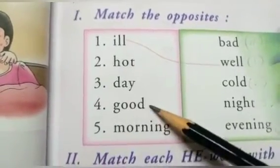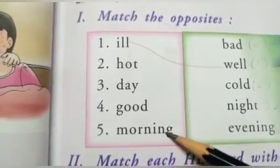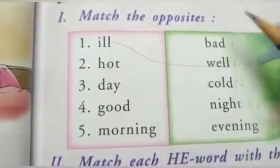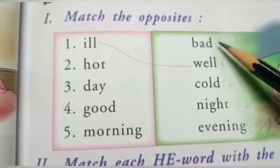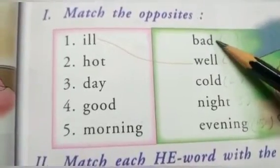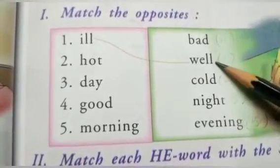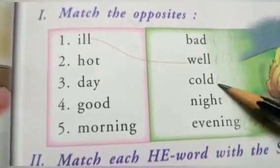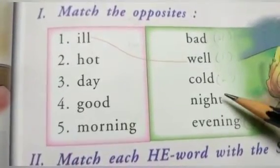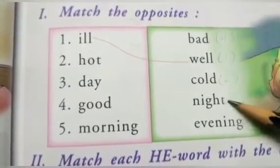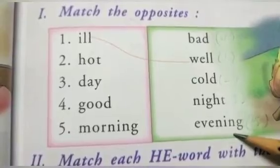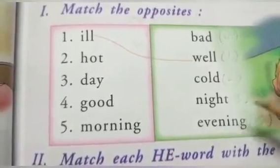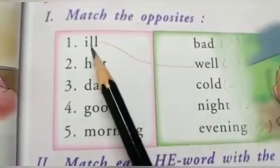his mom's loving son. Next one: match the opposites. In this column some words are given — ill, hot, day, good, morning — and in the next column: bad, well, cold, night, evening.